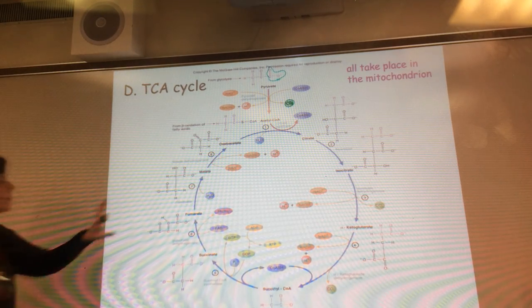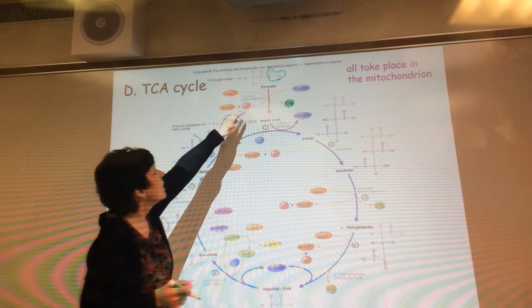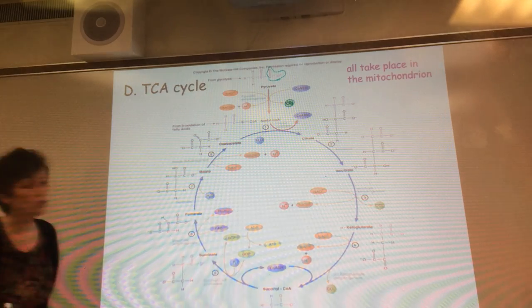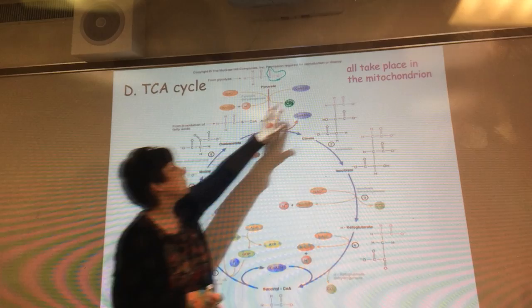Remember, that's our pyruvate dehydrogenase complex, that big complex we talked about in the last lecture. So now we're left with the two-carbon unit, and we know that we're going to require coenzyme A for that.